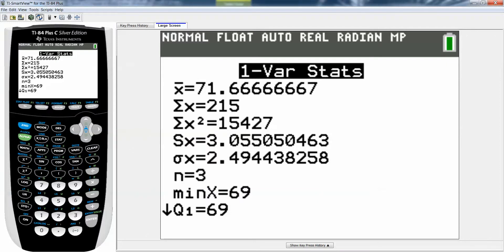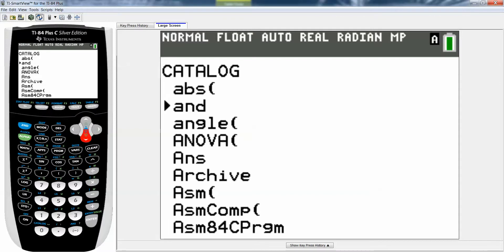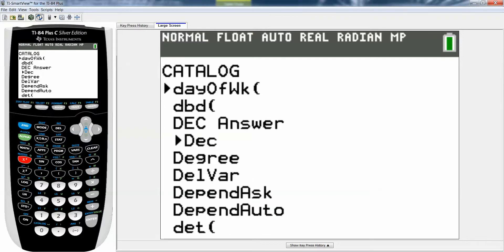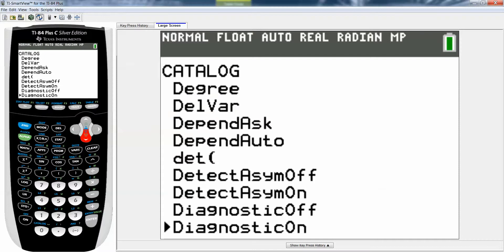Go to catalog - second zero - to see the catalog, and you scroll down to the D's. Or if you're really crafty, you hit alpha C (the D above the X to the negative 1 button), and that'll get you down there. Then you scroll down until you get to diagnostic on.